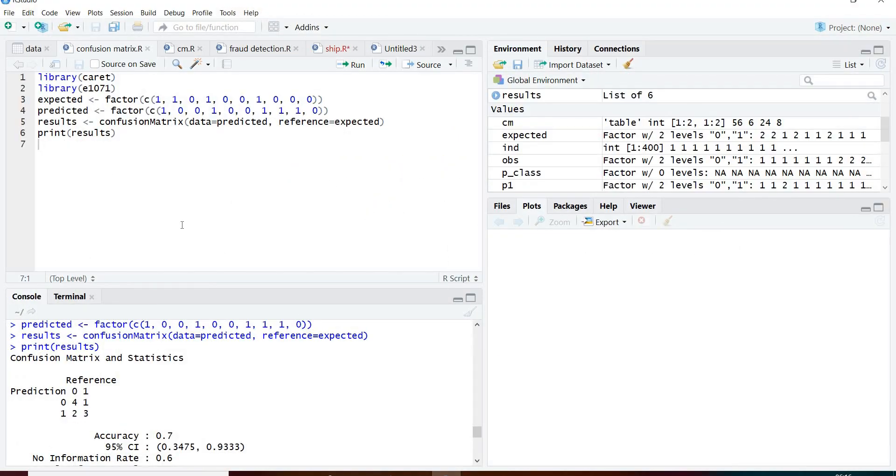To implement confusion matrix in R, we load the packages caret and E1071. Then, let us assume the expected and the predicted value, which is converted to factor. We convert it to factor so that the values are in levels.